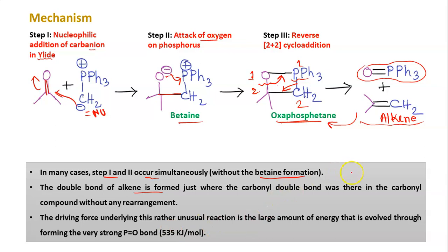What is the driving force for this unusual mechanism? The driving force is the large amount of energy released in the formation of the P=O bond. The P=O bond energy is very high — 535 kJ/mol — so this bond is very stable. As a result, the equilibrium is easily shifted from left to right, and we obtain the desired alkene product in high yield. Although triphenylphosphine oxide is the side product, its stability (due to the high P=O bond energy) actually helps drive the reaction toward the desired alkene.